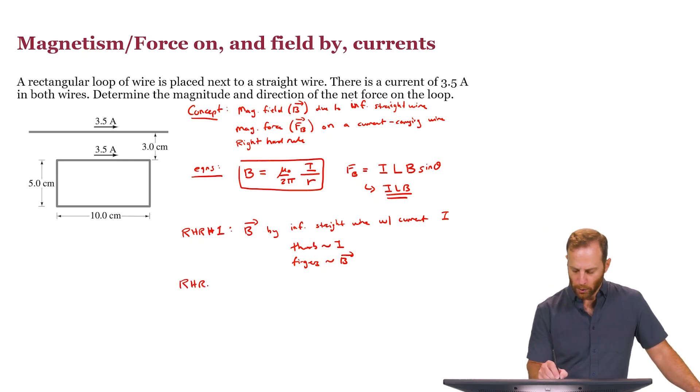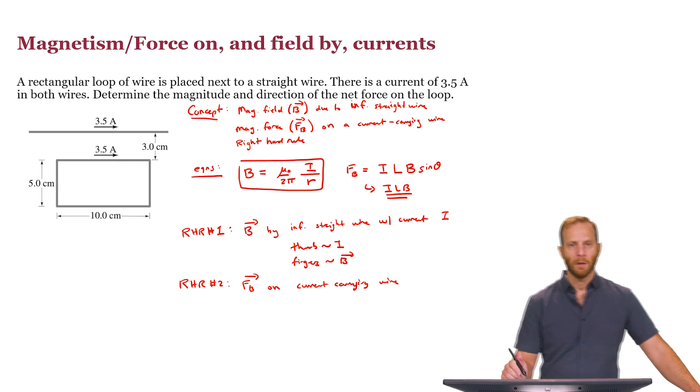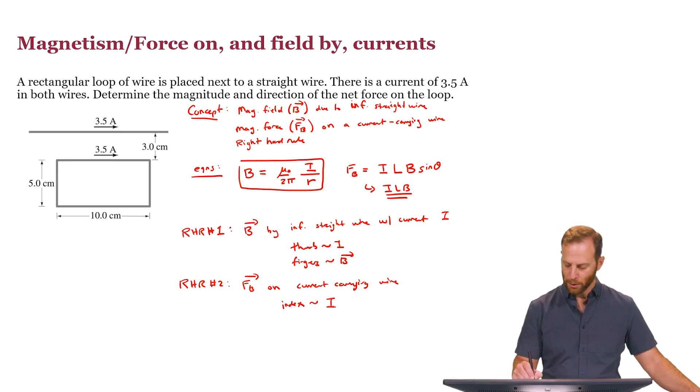What about right-hand rule number two? This has to do with the magnetic force. The magnetic force on a current-carrying wire. So if there's a wire that contains current, the first thing you do is you take your index finger and point it in the direction of the current. So the index finger of your right hand points in the direction of the current. And if you're dealing with single-charge particles, this might also be the direction of the velocity.